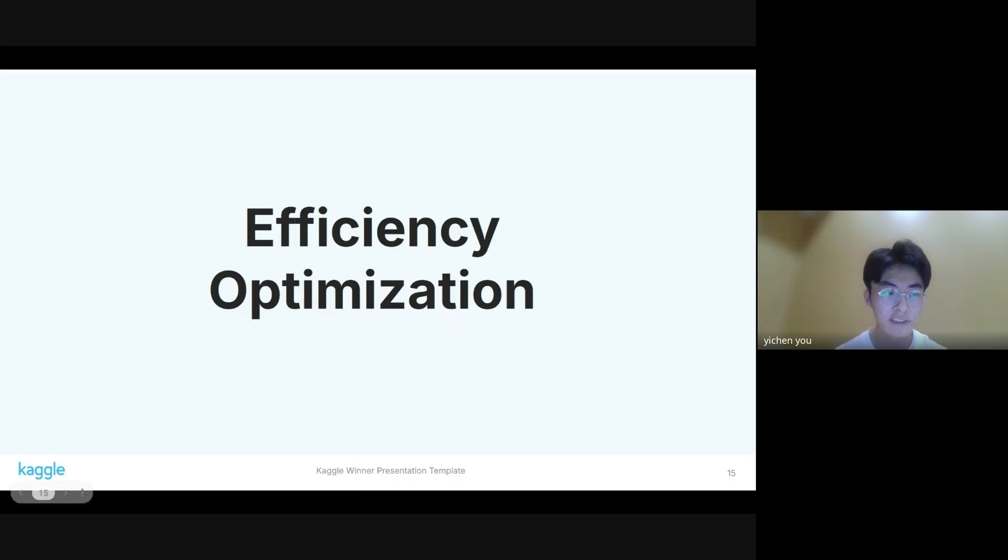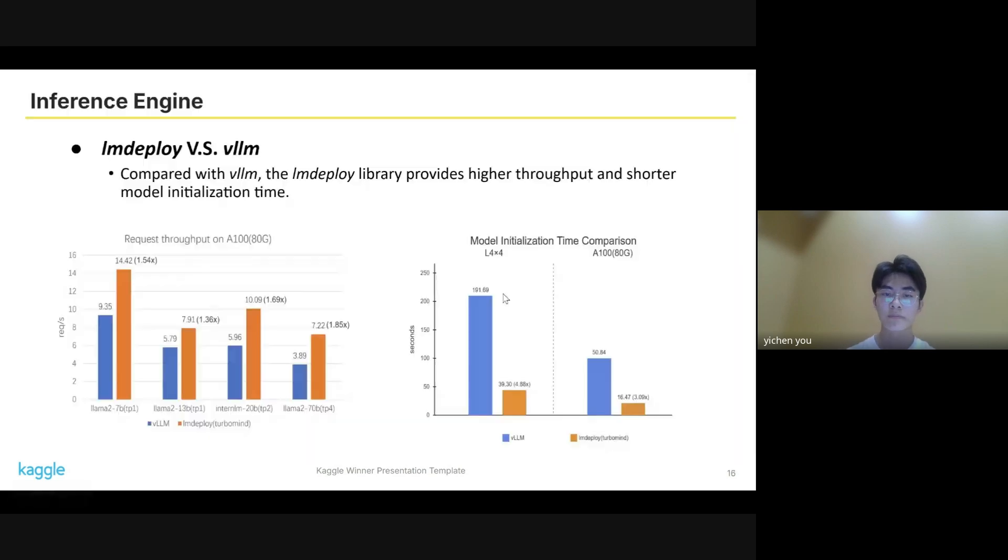In the second section, we tried to improve the efficiency of reasoning. We chose LMDeploy instead of vLLM as the backend of our inference. We found that compared with vLLM, the LMDeploy library provides higher throughput and shorter model initialization time.